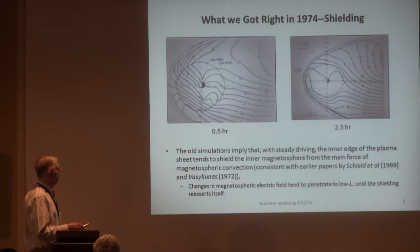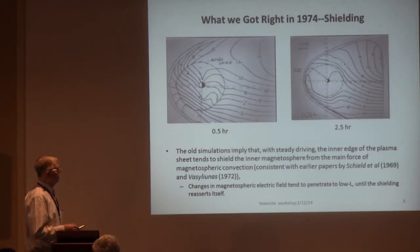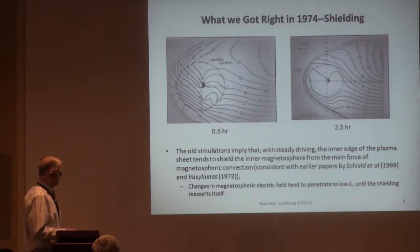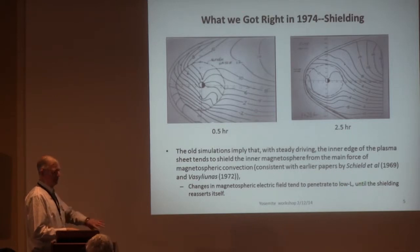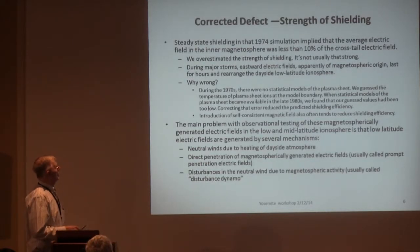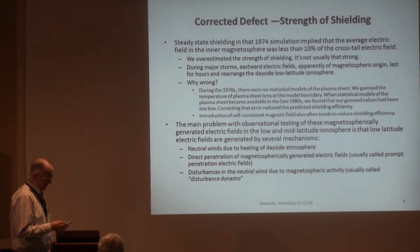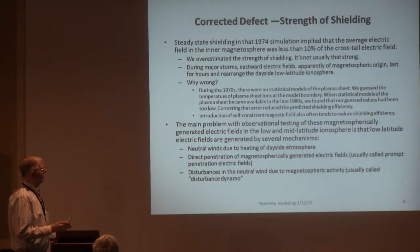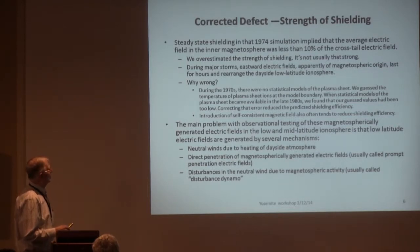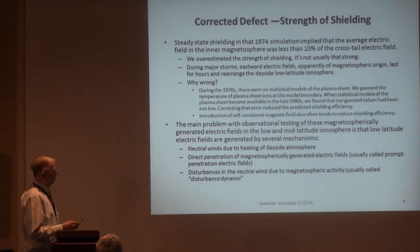The shielding — here again are two screen grabs. That's something else we got right: the tendency of the inner edge of the plasma sheet to shield the inner magnetosphere from the convection electric field. We found that changes in the magnetospheric electric field when the IMF turns north or south penetrate to low L, and then the shielding adjusts and reasserts itself — but in the meantime there's a penetration. Now, one thing we got wrong at that time was the strength of the shielding. In the pictures shown, the shielding was 90-some percent efficient, and that's not typical.